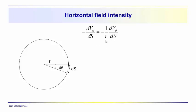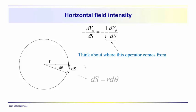Where does this R·dtheta term come from? To understand where this operator one-over-R d/dtheta comes from, we use the arc length relationship: ds equals R·dtheta. So we're simply substituting for the operator — the derivative out along the surface, along a line tangent anywhere on this circle — which is equivalent to one over R times the derivative with respect to theta.